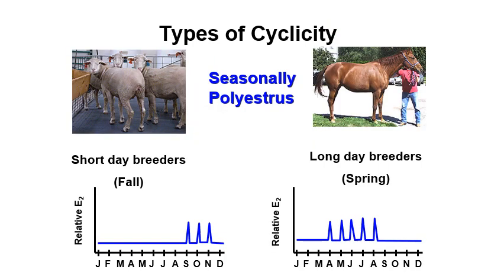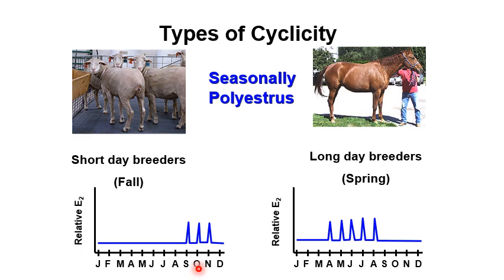We also have animals that are seasonally polyestrous — examples are sheep and horses. These animals exhibit estrus during particular seasons of the year. The ewe is considered a short-day breeder because she comes into heat when the days are short, such as during September, October, and November.